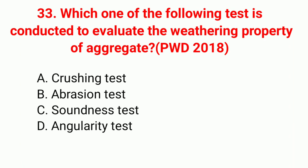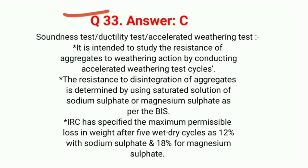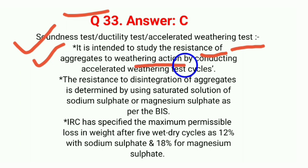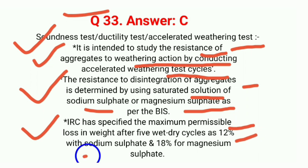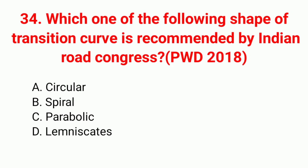Question 33: Which test is conducted to evaluate the weathering property of aggregate? Correct answer option C: soundness test. The soundness test studies the resistance of aggregate to weathering action through accelerated weathering test cycles. Resistance to disintegration is determined using saturated solution of sodium sulfate or magnesium sulfate. IRC has specified maximum permissible loss in weight after 5 wet-dry cycles as 12% with sodium sulfate and 18% for magnesium sulfate.